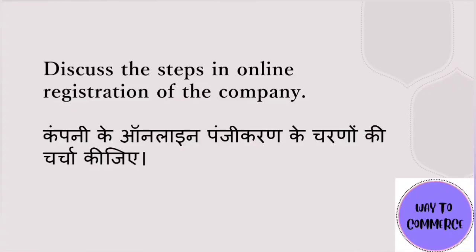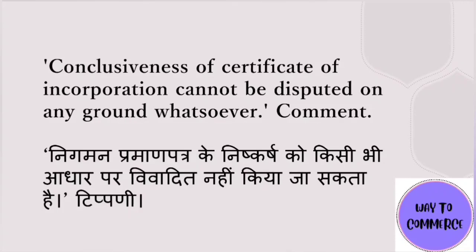The last step is the issuance of the certificate of incorporation. So online registration has around 6-7 steps. The next question: 'Conclusiveness of a certificate of incorporation cannot be disputed on any ground whatsoever — comment.' First explain what the certificate of incorporation is, then state that once issued it cannot be rejected on any ground. You can write relevant cases like Jubilee Cotton Mills Ltd to complete the answer.